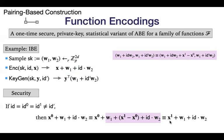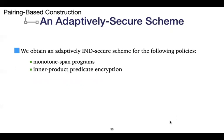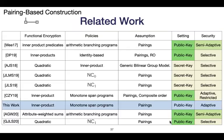For more details I will point you to the paper. We obtain an adaptively secure scheme for monotone span programs and for orthogonality testing with hidden attributes, that is, inner product predicate encryption.